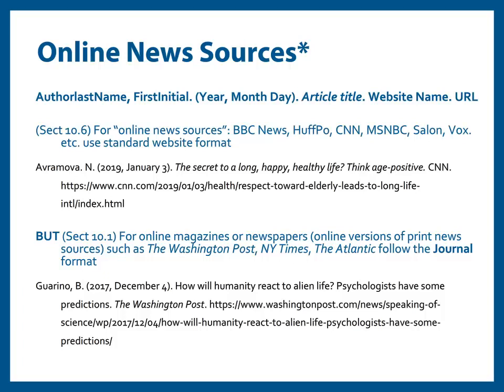For most online articles, the article title is italicized, followed by the website name which is not italicized. Follow the same format when citing from online news sources such as CNN, Vox, or Huffington Post. When citing from online magazines or newspapers such as the New York Times, The Atlantic, or Wall Street Journal — which do have print counterparts — APA requires you to follow the journal format: do not italicize the article title, but the source title instead. Here you will include the URL, as the content is not reproduced exactly the same as in the print version.